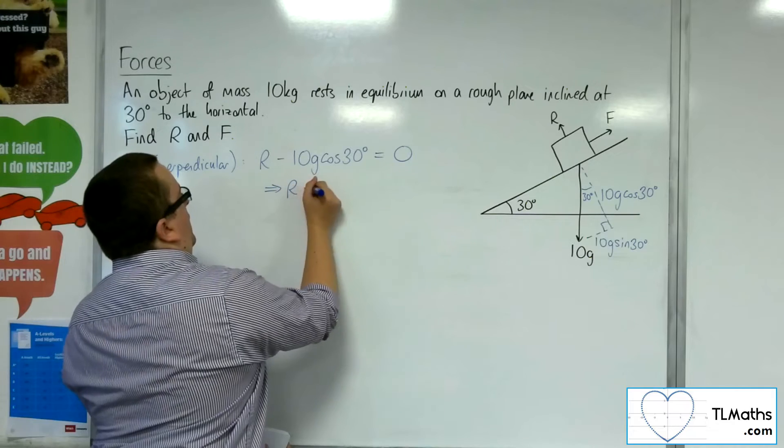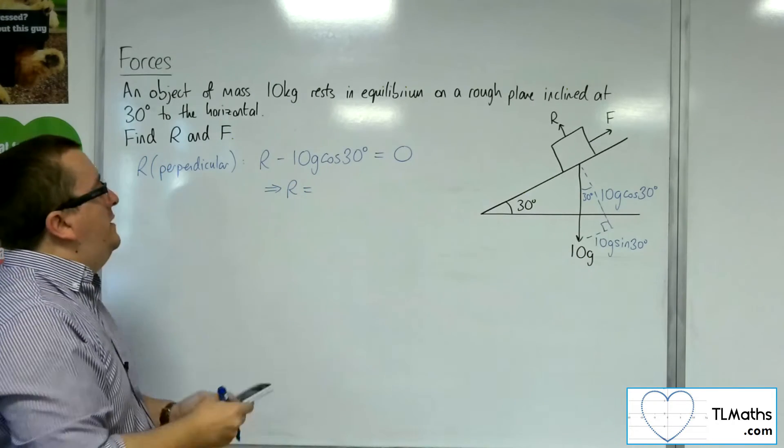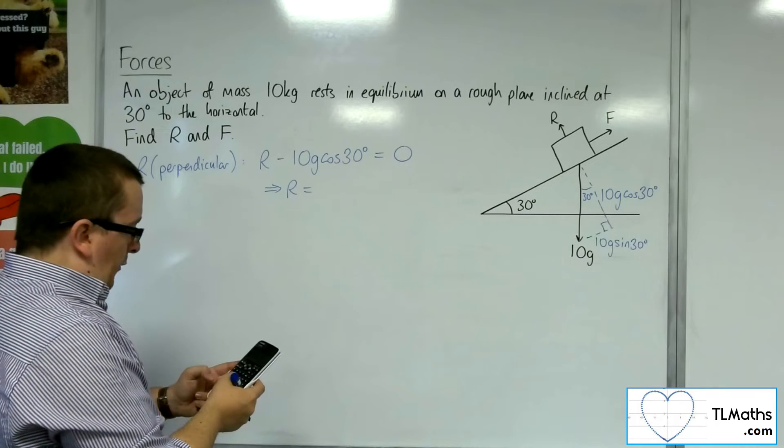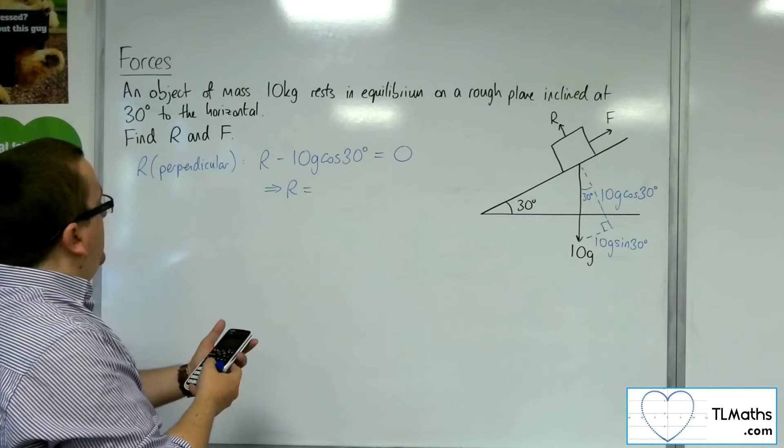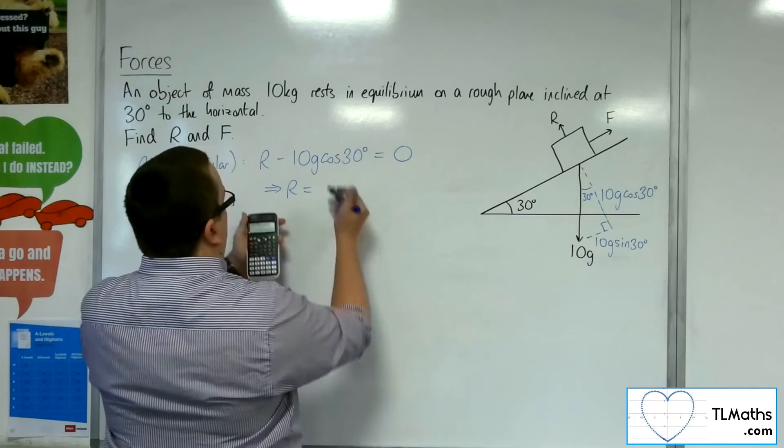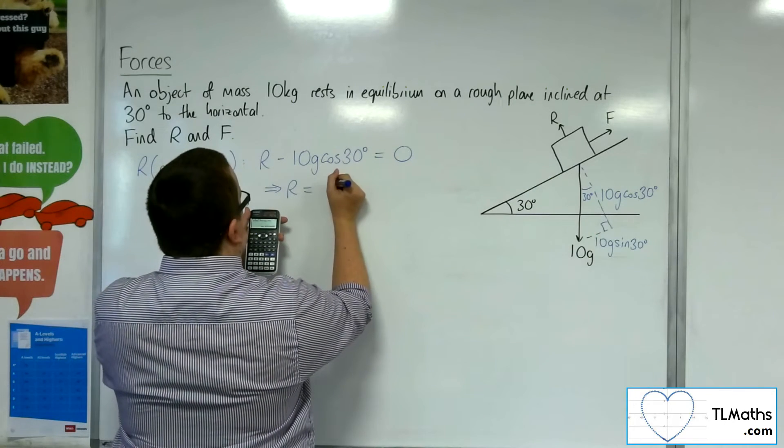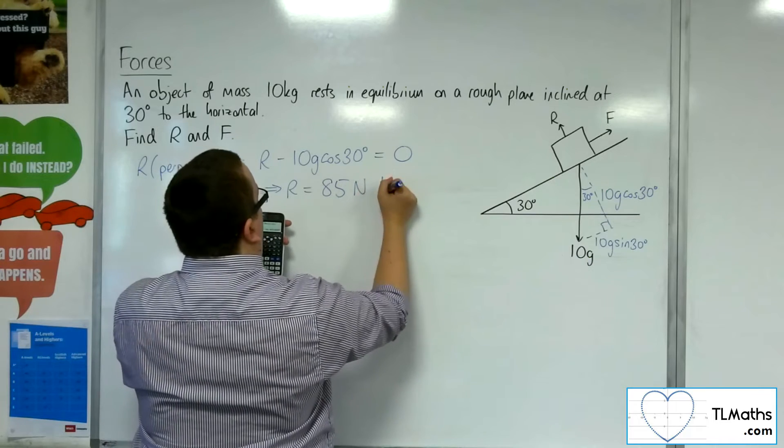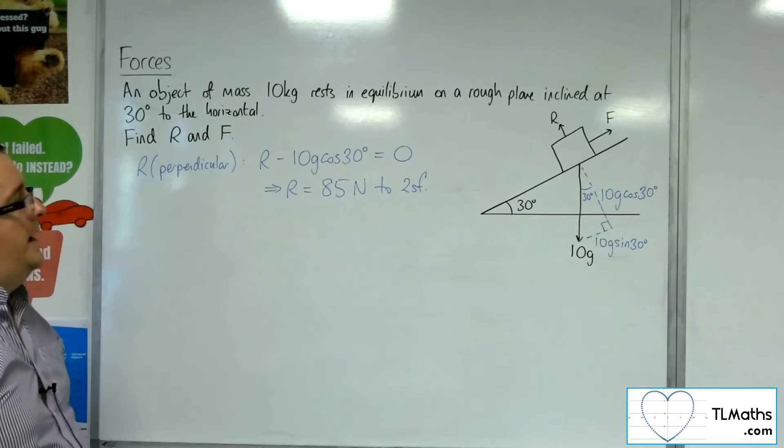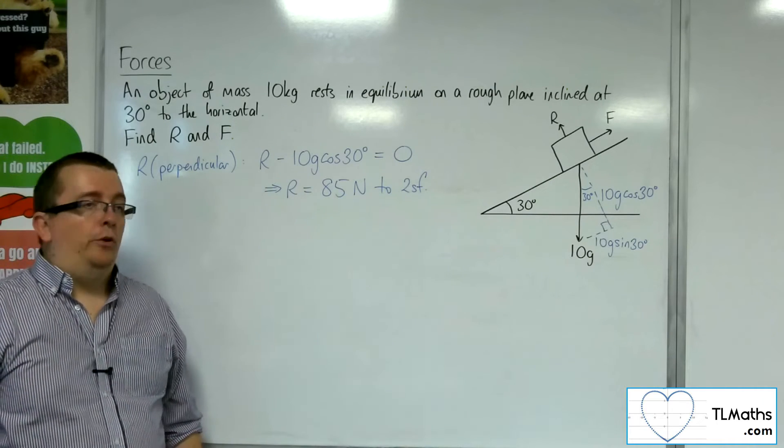So that means that R, if I take G as 9.8, is 10 times 9.8 times cosine of 30 degrees, which is 49 root 3, so 84.87, so 85 newtons to two significant figures. That's my normal reaction force.